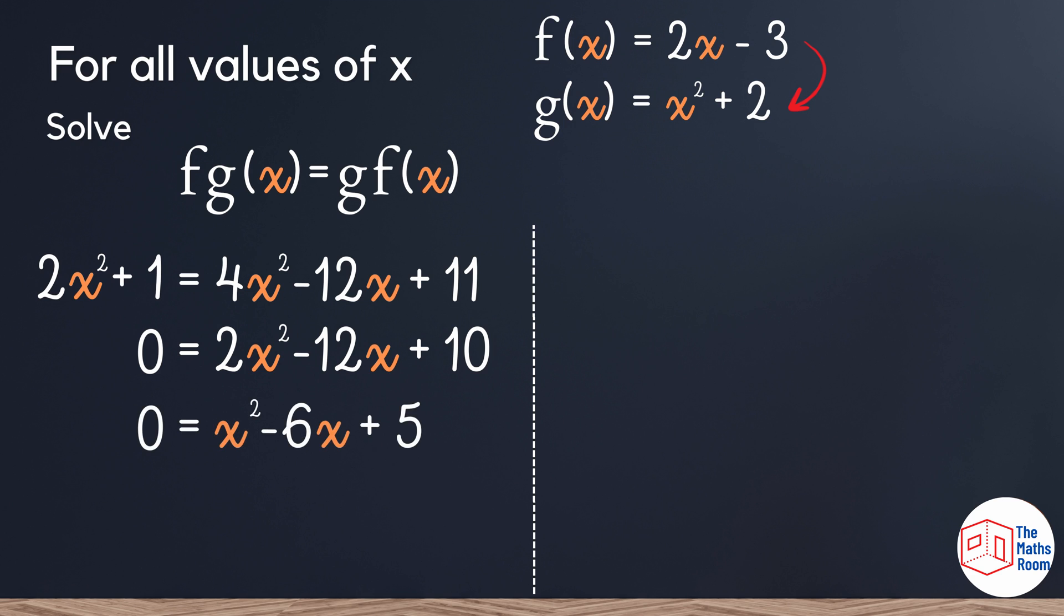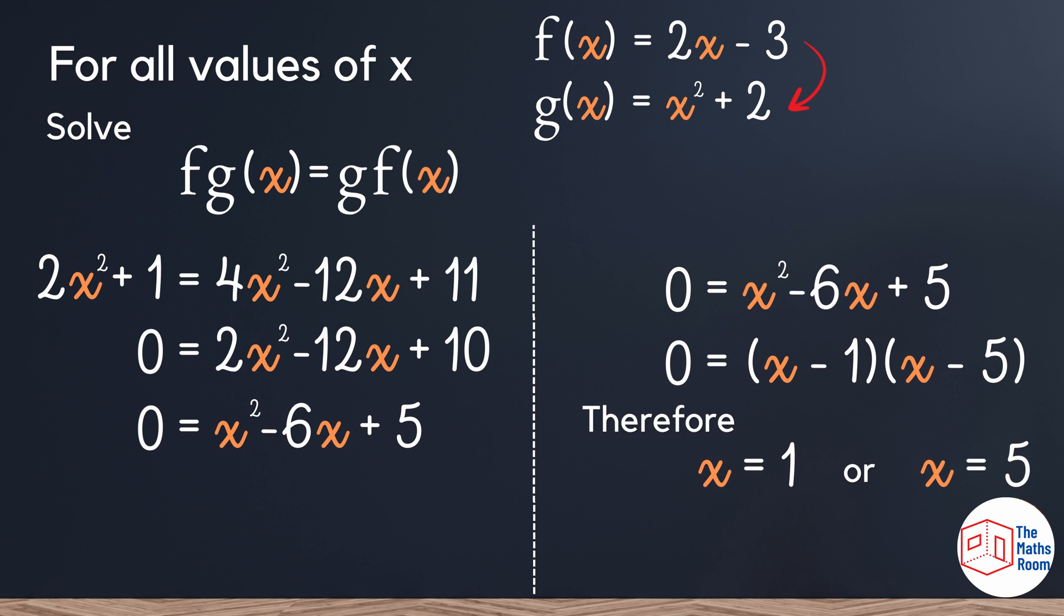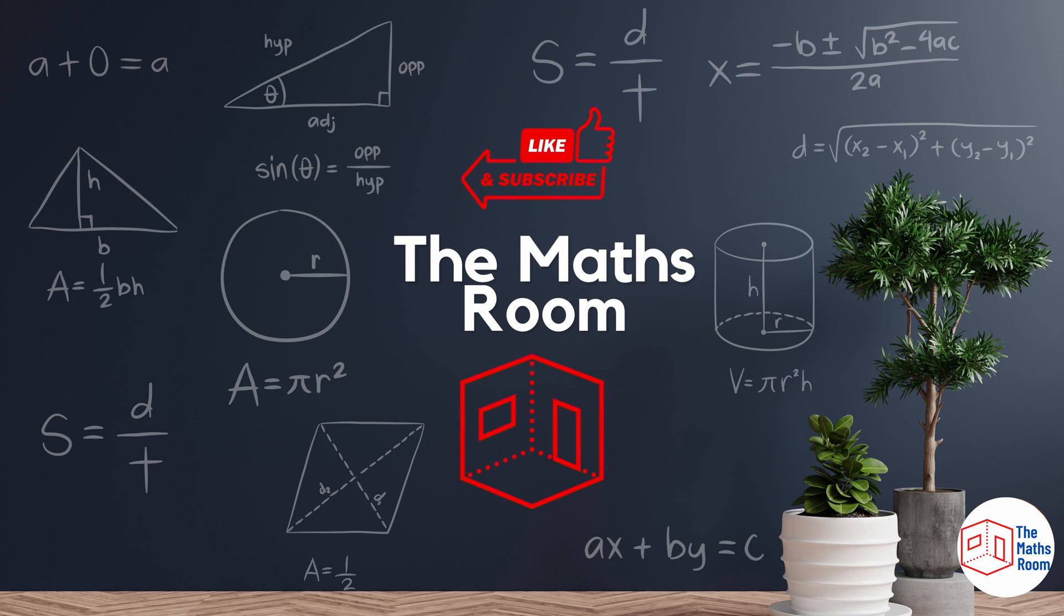Factorizing the equation, we can see that we have x minus 1 and x minus 5. Therefore, x equals 1 or x equals 5. I hope it helped. Have a great day and we'll see you soon.